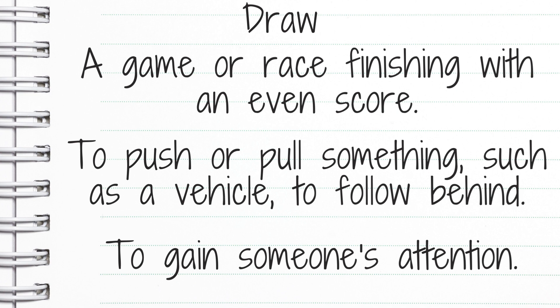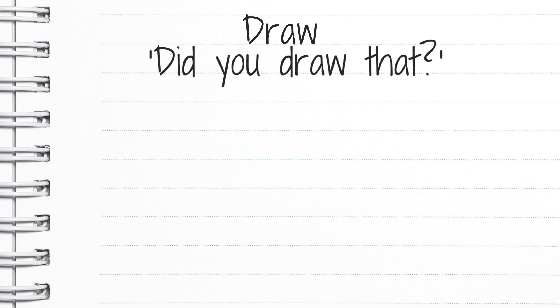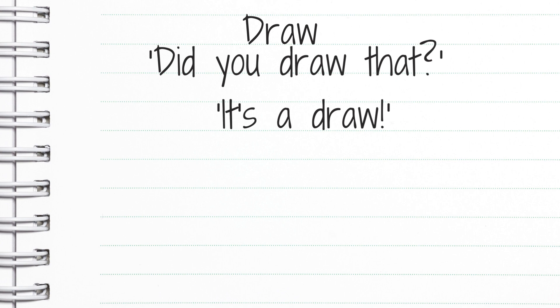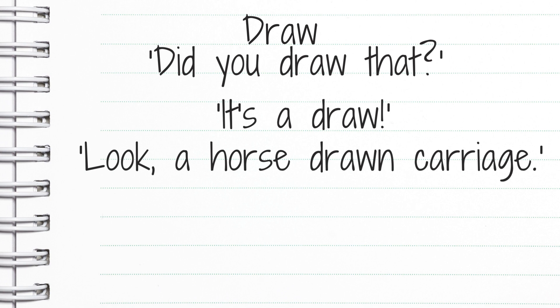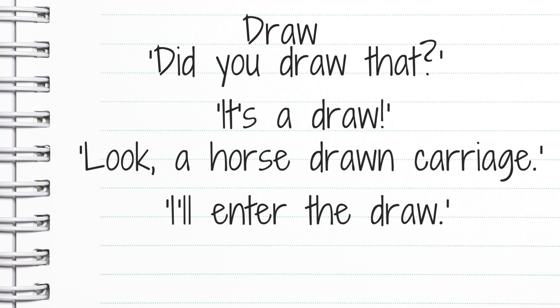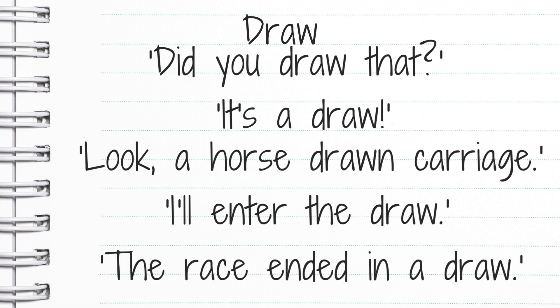Let's get into some sentence examples. 'Did you draw that?' — referring to the artwork. 'It's a draw' — two runners reached the finish line at the same time. 'Look at that horse-drawn carriage' — that's the push or pull meaning. 'I'll enter the draw' — referring to the lottery or raffle. 'The race ended in a draw.'